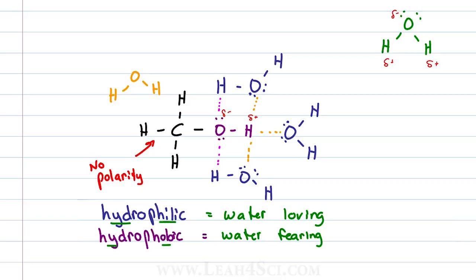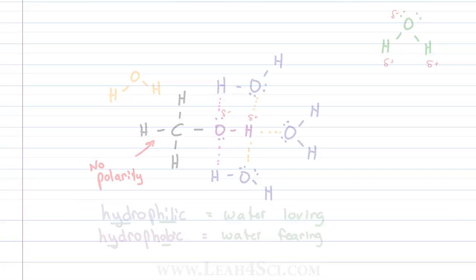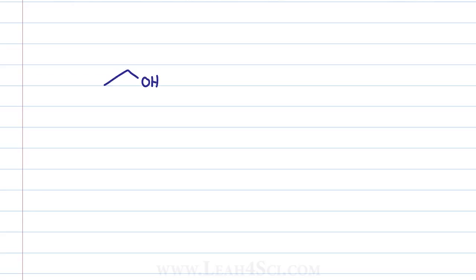But the bigger the carbon group, the more it starts to matter. If we look at something like ethanol which is grain alcohol or drinking alcohol, it's still pretty small. We have a carbon group, a carbon group and an OH group and we can estimate that the alcohol is about a third of the molecule. It's still close enough to a majority. Water can still play a nice role in helping dissolve and so ethanol is going to be soluble in water.